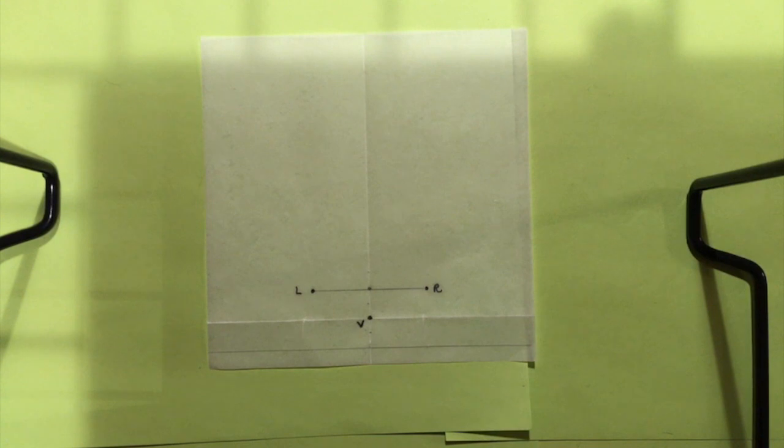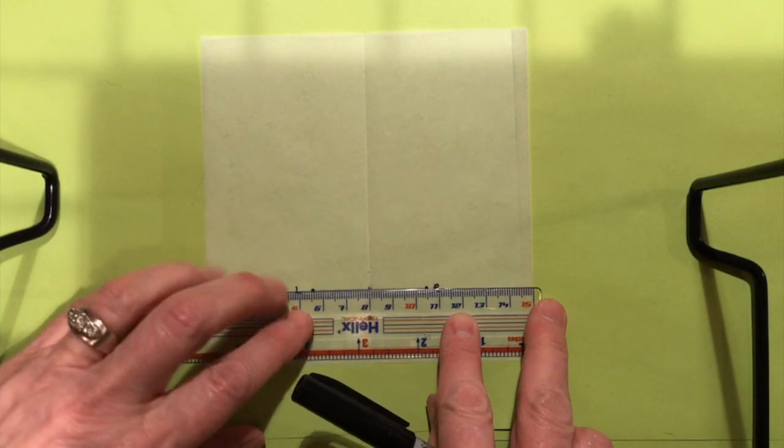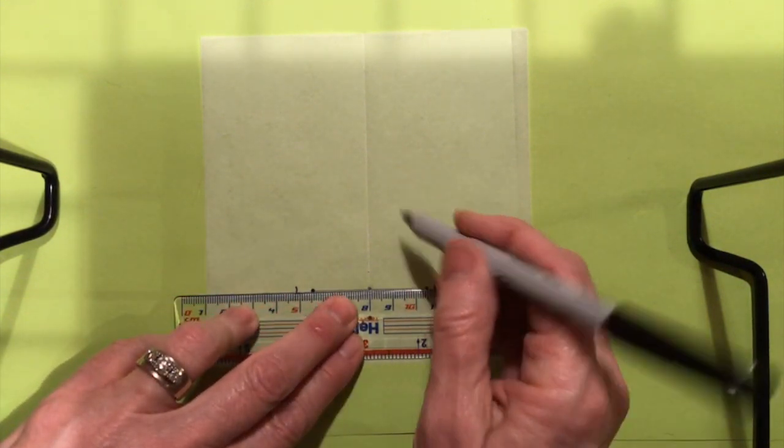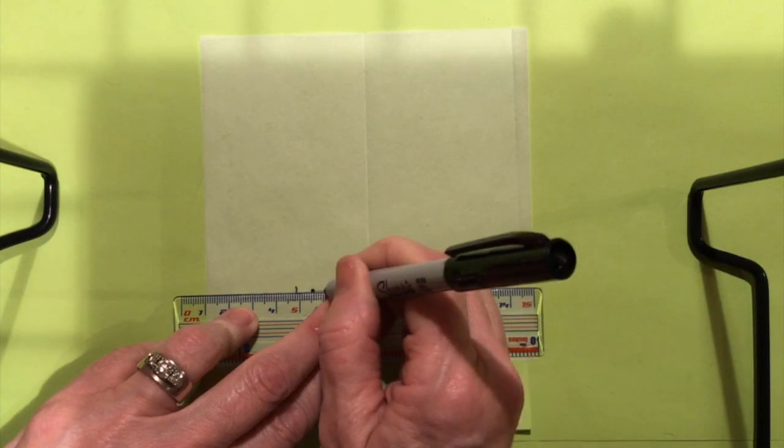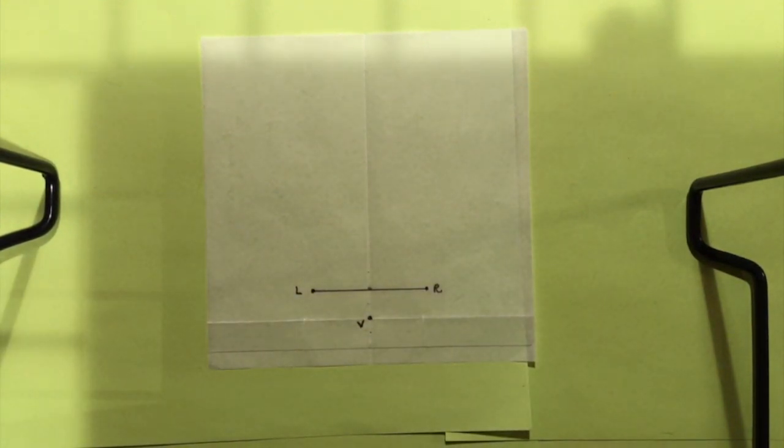On that layer, I'm also going to darken the line segment between the points L and R. I really want to be able to see those features on this layer.